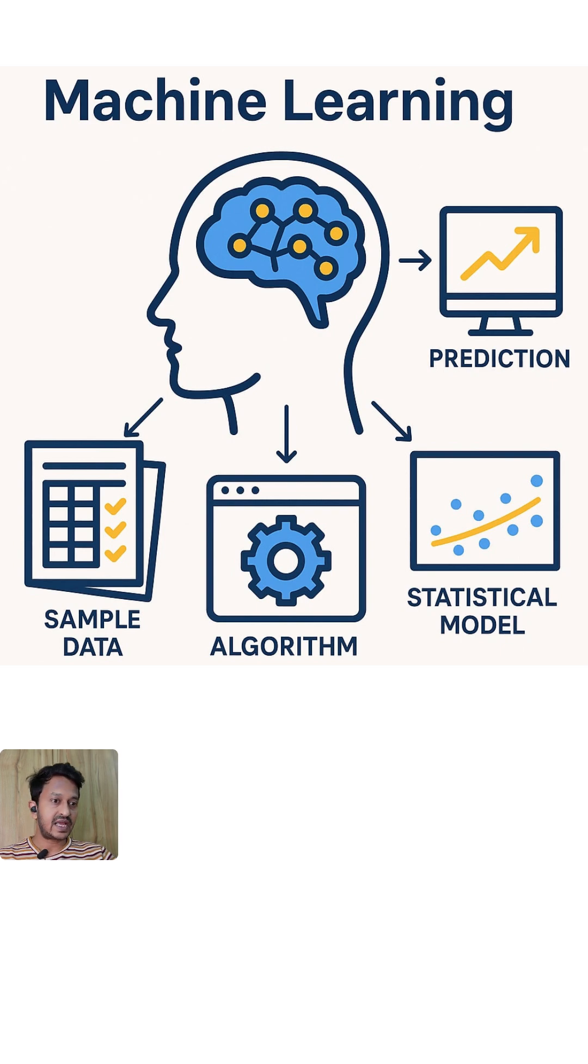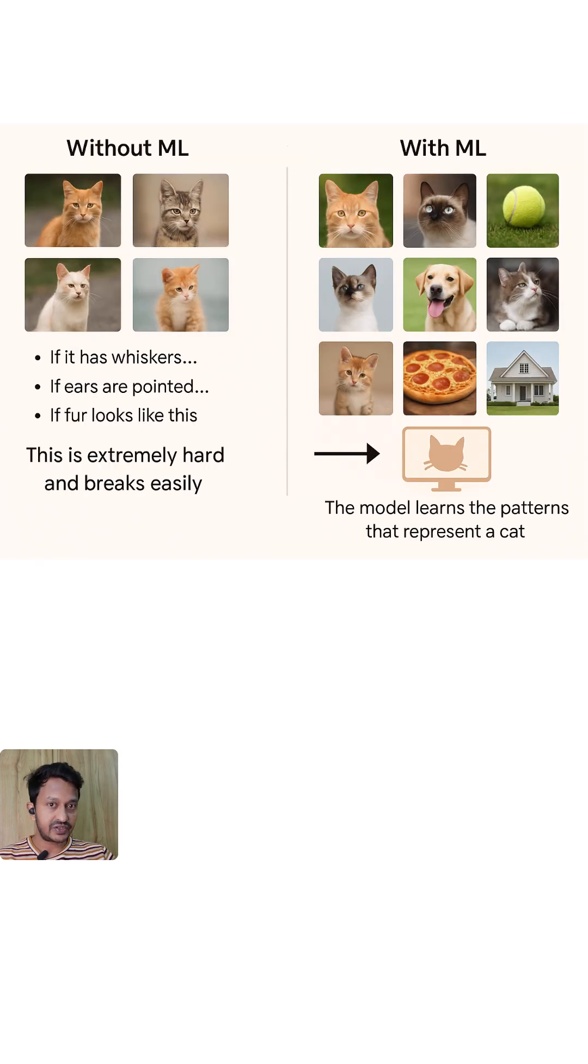So one more example is like, you want a system to recognize cat images in a lot of images. And then without machine learning, your programmers need to hard code everything, every feature of the cat, how it looks, all the features, like if it has whiskers, if the ears are pointed, if the fur looks like this. So this is extremely hard and breaks easily.